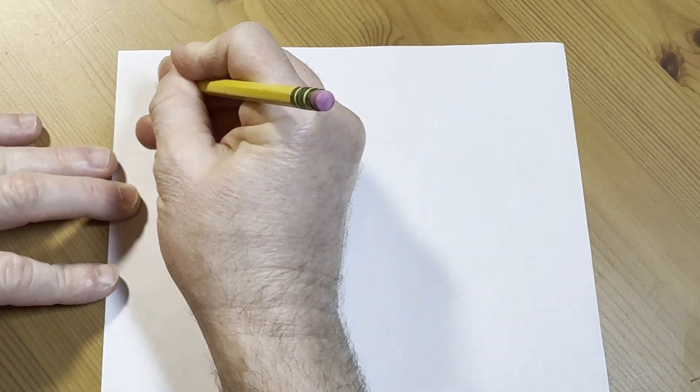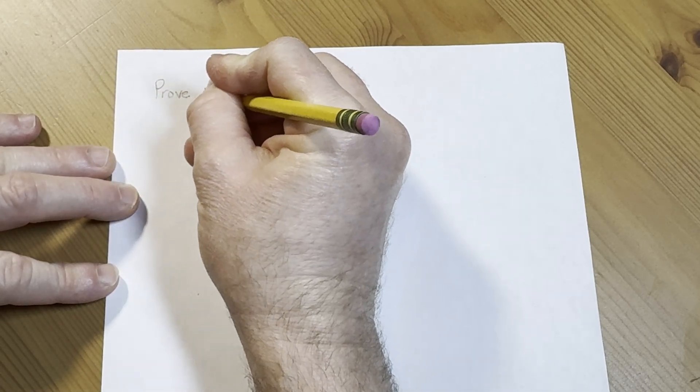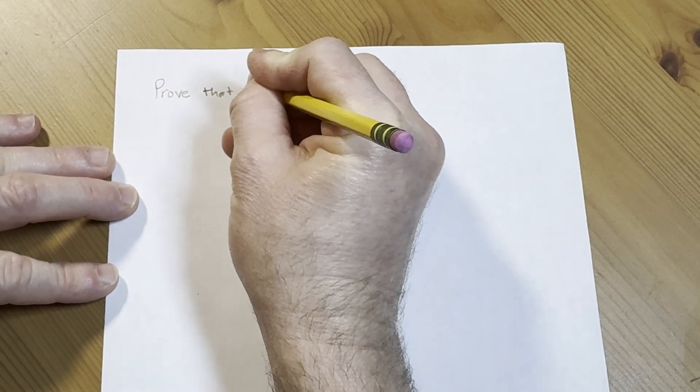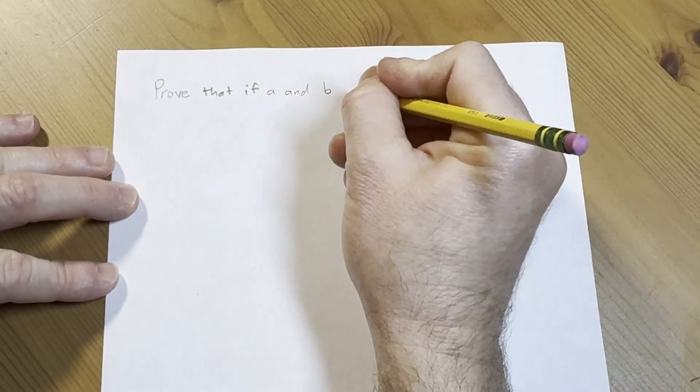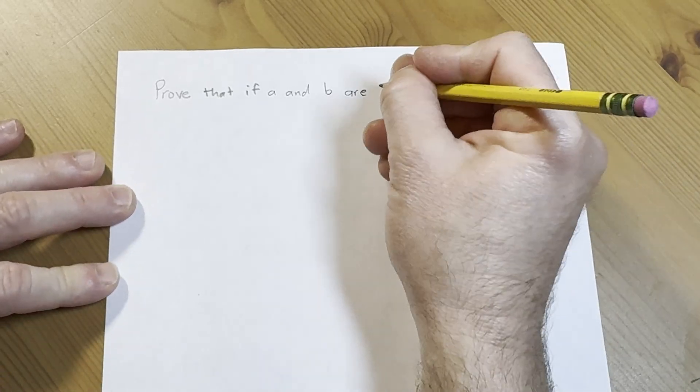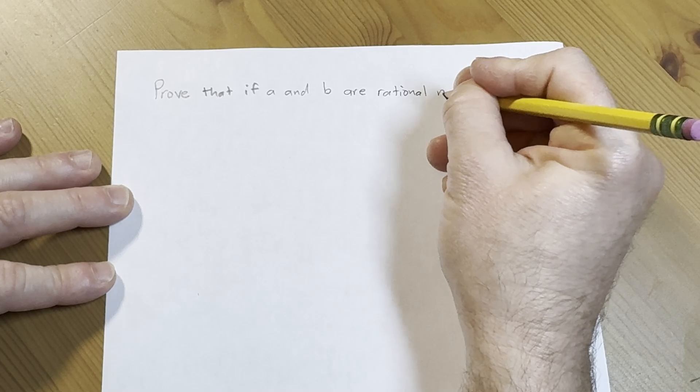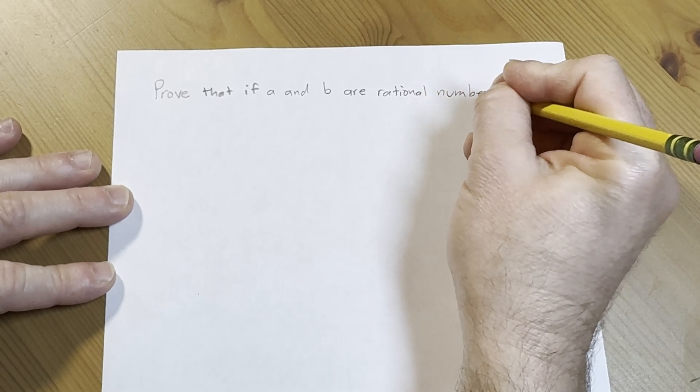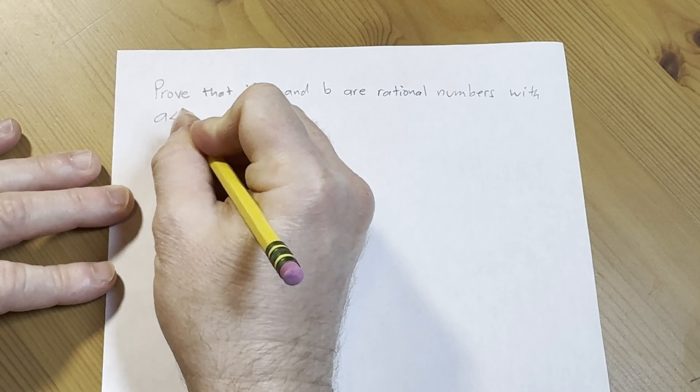So we're going to prove that if a and b are rational numbers with a less than b...